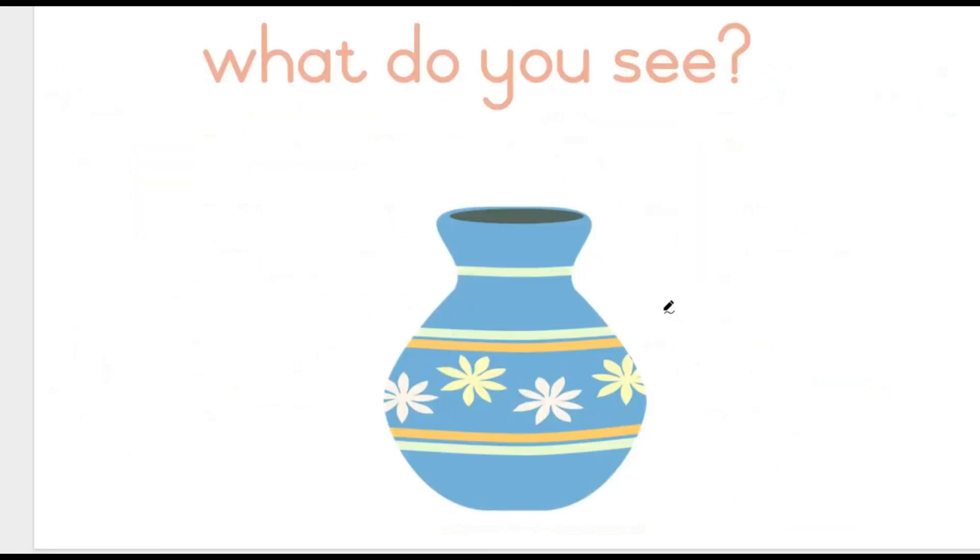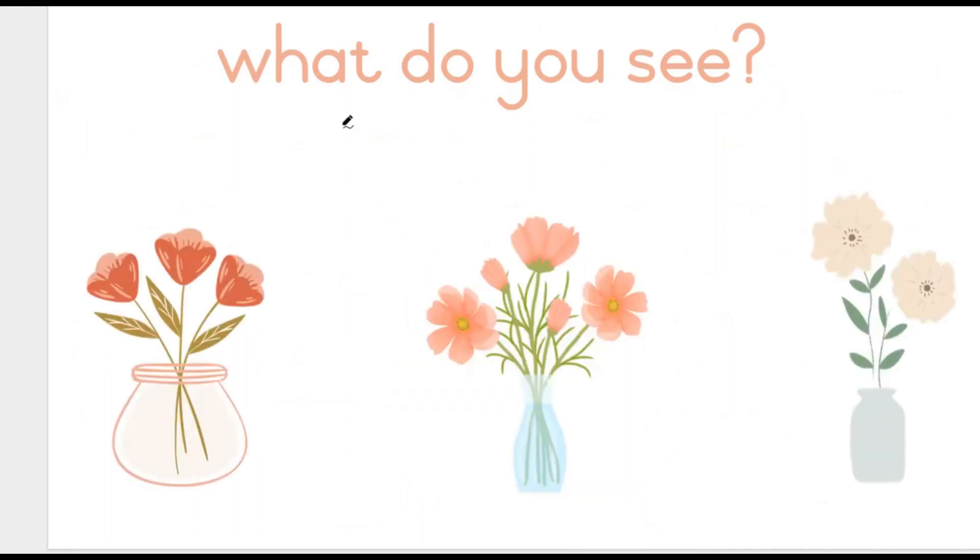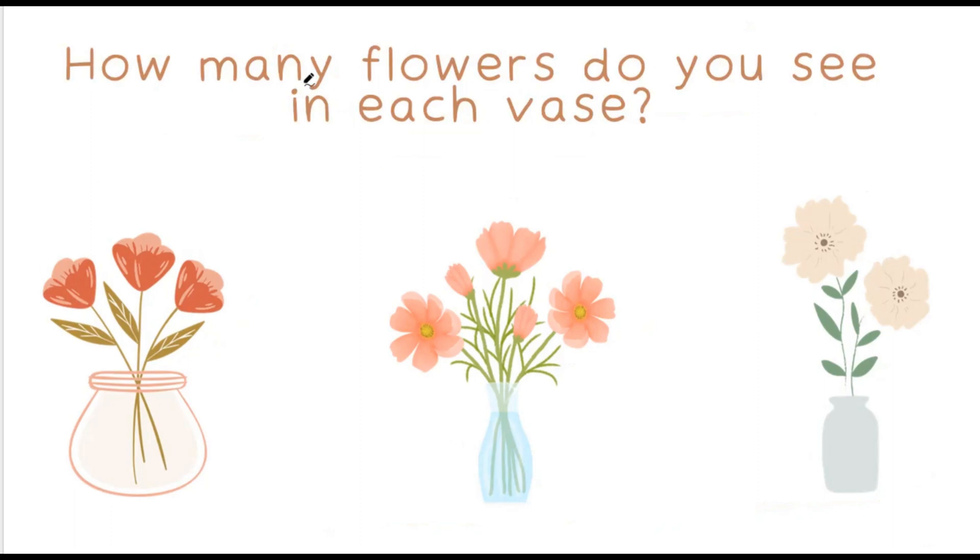What do you see? I can see a vase. This is a vase. What do you see now? I can see 3 vases with flowers in them. How many flowers do you see in each vase?